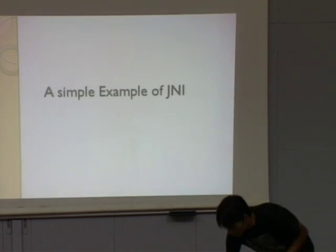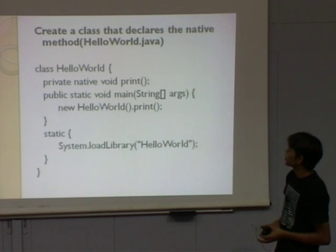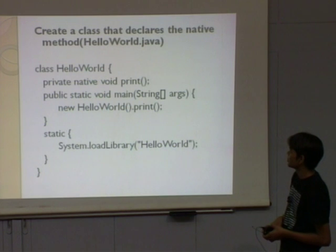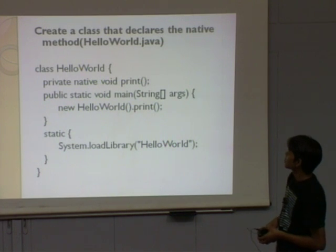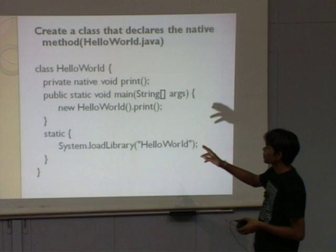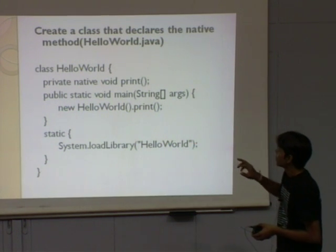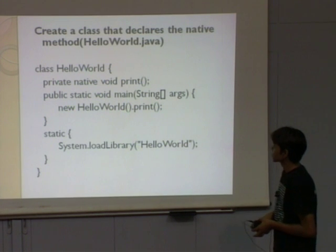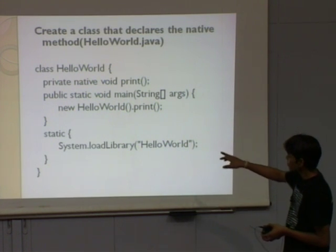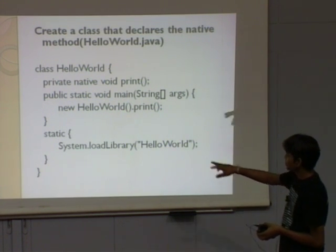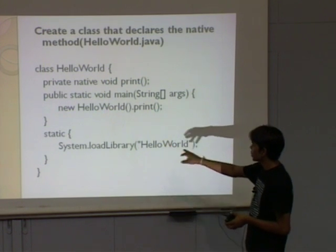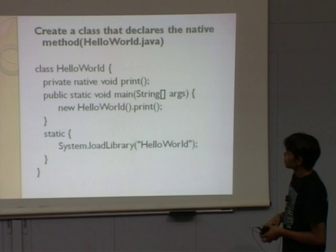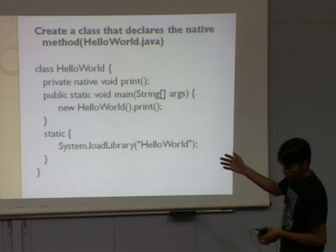This is a simple Hello World example of JNI. First, you have to create a class — HelloWorld.java. In that class, you declare a native method — just the prototype — then call it from the main method. System.loadLibrary loads the HelloWorld library at dynamic runtime.